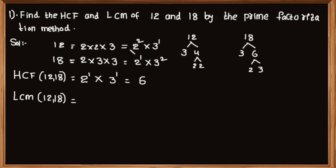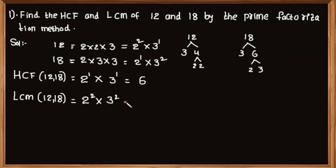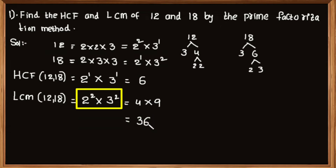The product of greatest powers of each prime factor is known as LCM. 2 squared and 3 squared are the greatest powers of the prime numbers 2 and 3. LCM of 12 and 18 is equal to 2 squared multiplied by 3 squared, that is equal to 4 multiplied by 9, which equals 36. So LCM of 12 and 18 is equal to 36.